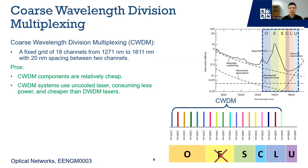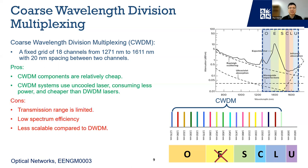Compared to DWDM systems, CWDM components are relatively cheap to make and can use uncooled lasers, which reduces power consumption and allows operation in a wider range of environments. However, CWDM can support transmission distances of up to 80km only, as there are no optical amplifiers that can operate at such a wide spectrum range. Also, spectrum efficiency is low — theoretically it can support up to 18 channels, but in reality only up to 8 channels in a fiber. Compared to DWDM, its components are less scalable with fewer options in the market. Overall, CWDM is a cost-effective solution for short-distance optical networks.